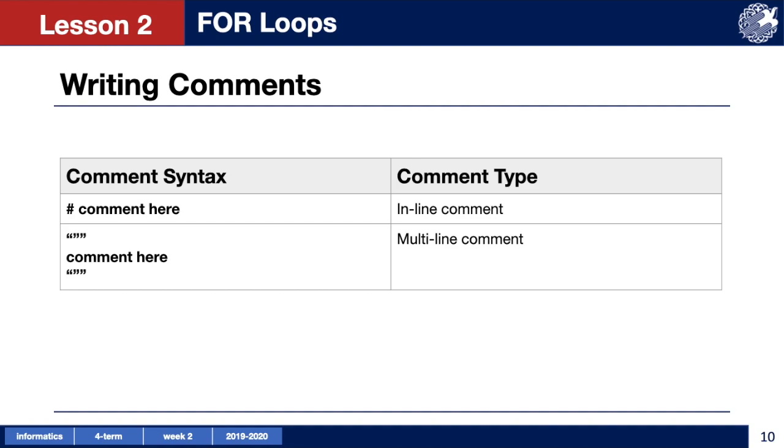Multiline comments should be used at the beginning of your code to describe the problem that the code is solving. To write multiple line comments we type three quotation marks in a row and then start a comment on the next line. Below the last line of your comment type three quotation marks again to end the comment, so the computer can read the commands after the multiline comment.